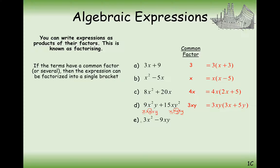Okay, final one here. We're going to get 3x as our common factor, and that goes at the front of a bracket. Then what do we need to times the 3x by to make our term at the front?